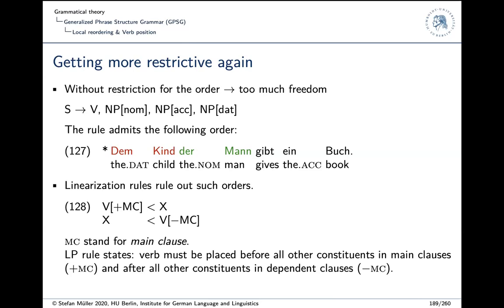One restriction — actually two — are the ones in rule 128. The first says that a verb in the main clause precedes all other constituents. The second says the verb in a dependent clause follows all other constituents. You might say German is verb-second, so there should be at least one thing to the left of the verb. But as we'll see later, that's handled differently as a non-local dependency.